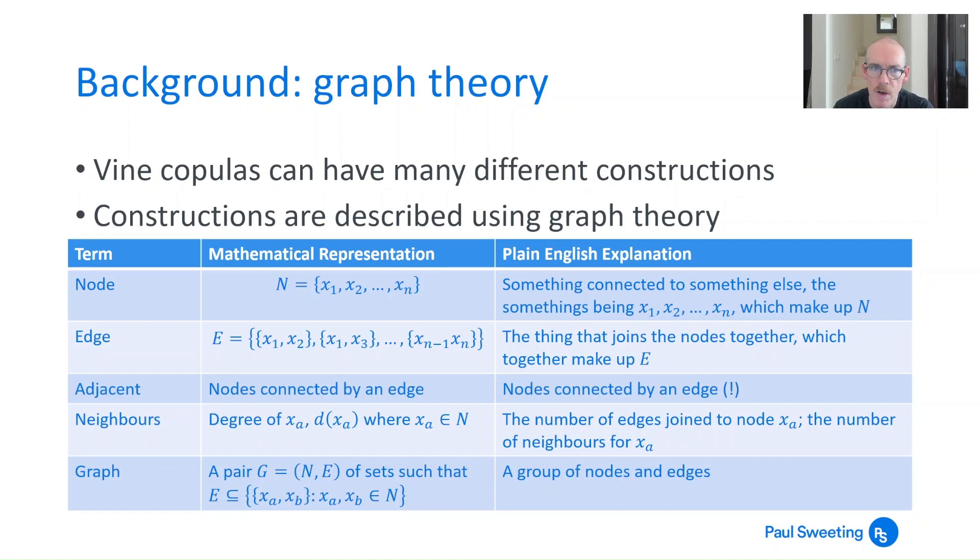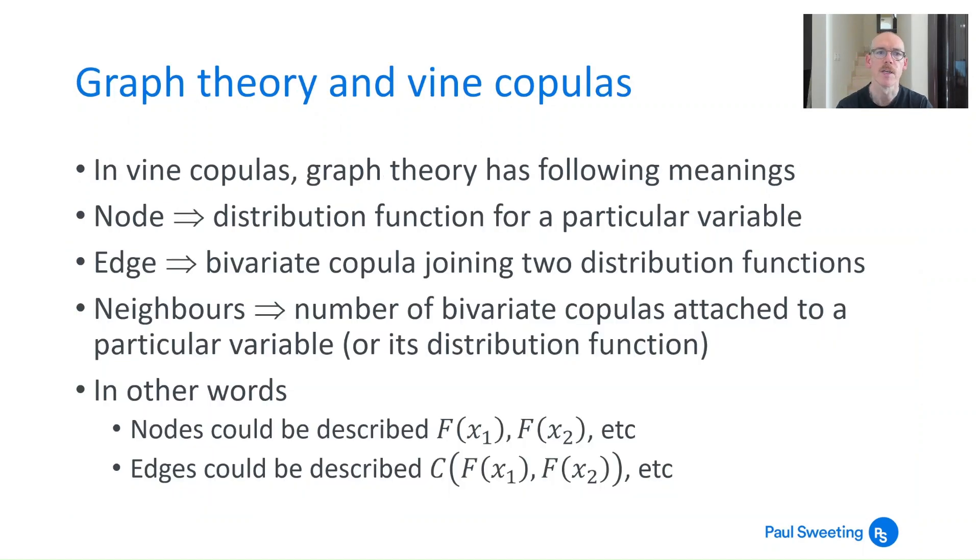Not all graphs can be vine copulas but all vine copulas are graphs. So in vine copulas graph theory's got the following kind of meaning. A node represents a distribution function for a particular variable. An edge describes the bivariate copula joining those two distribution functions. And the number of neighbors is the number of bivariate copulas that you've got attached to a particular variable or its distribution function. You could describe nodes as f(x1), f(x2) and so on. You could describe edges as the copula c(f(x1), f(x2)) and so on. It's not exactly correct and sometimes we're talking about density functions rather than distribution functions, but the broad structure is individual variables on the nodes and something copula-like is the edge.